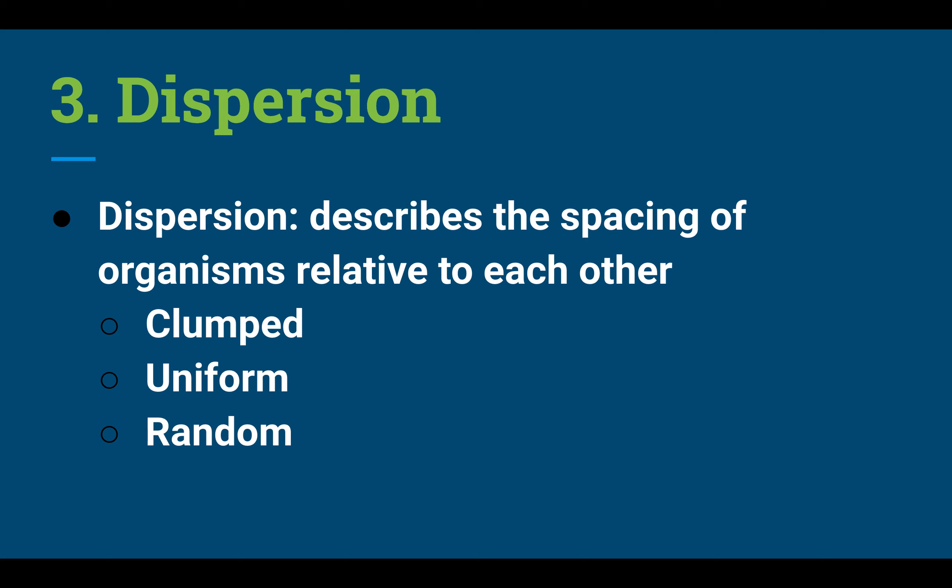Our last factor is dispersion, which describes how spaced out individuals are in an area. There are three dispersion patterns: clumped, where individuals are in groups; uniform, where they are evenly spaced from one another; and random, where there is no pattern — some areas might be clumped and others spread out with no rhyme or reason.